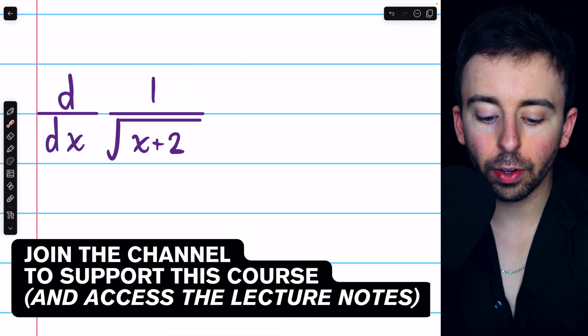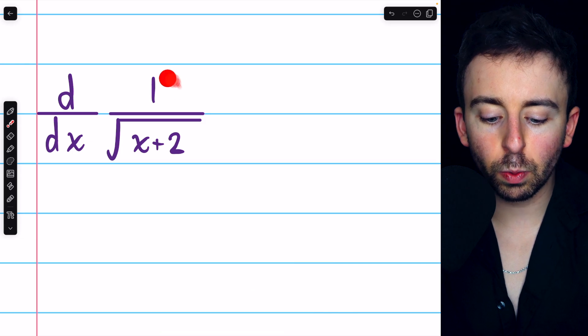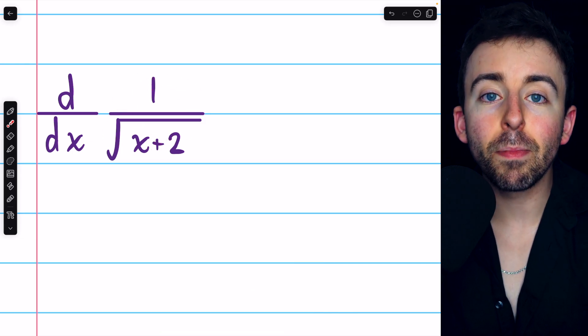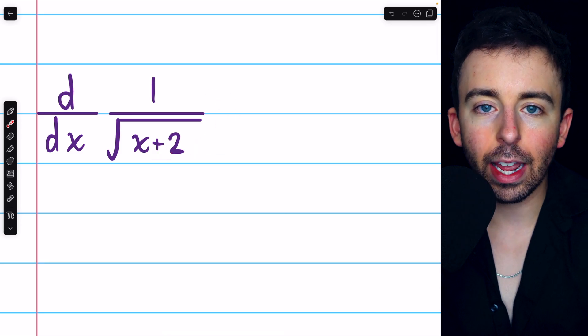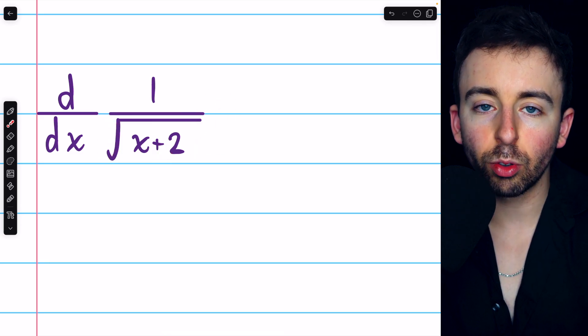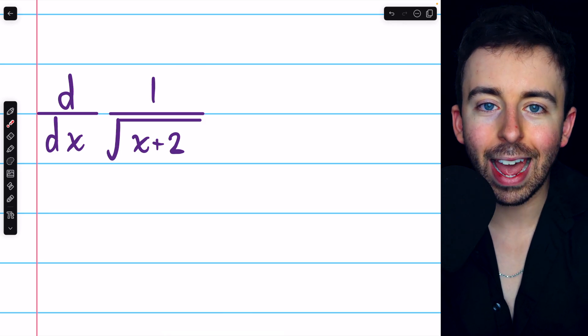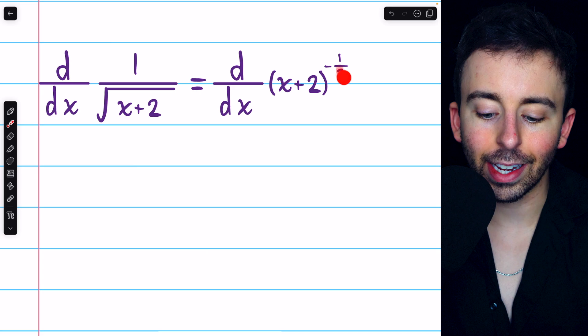To find the derivative of 1 over the square root of x plus 2, the first thing we should do is rewrite this expression as a power of x plus 2. We can get it out of the denominator by giving it a power of negative 1, and then we can rewrite the square root as a power of 1 half. Hence, we rewrite the whole thing as x plus 2 to the negative half.